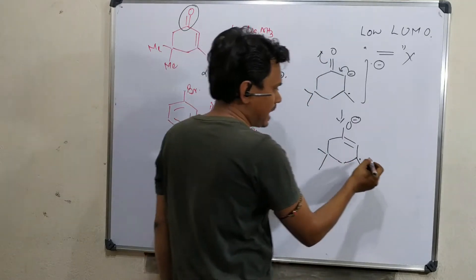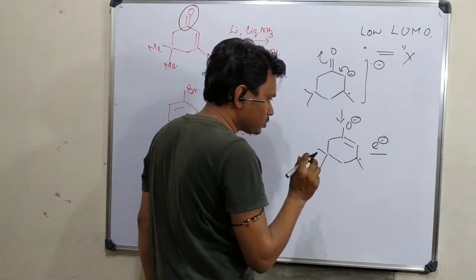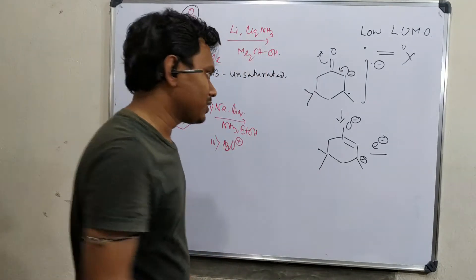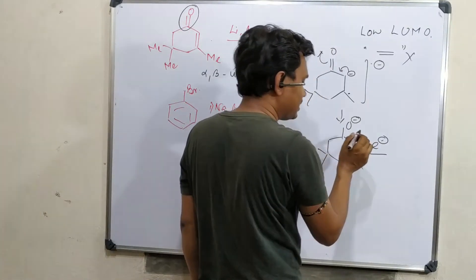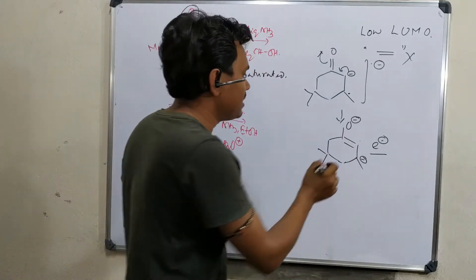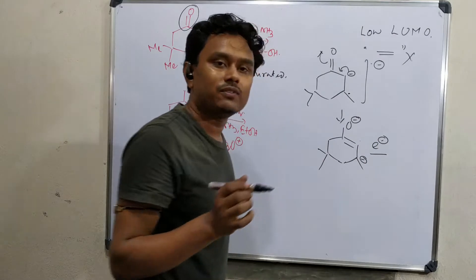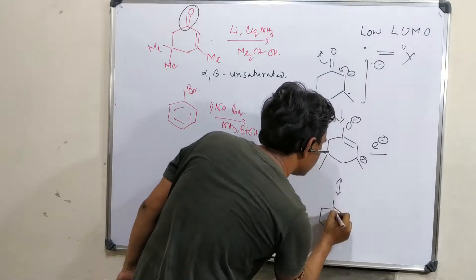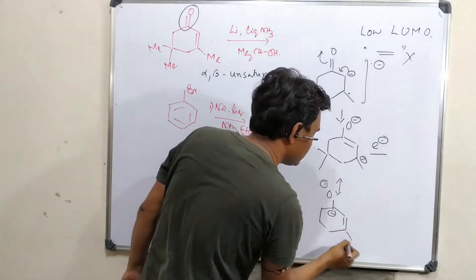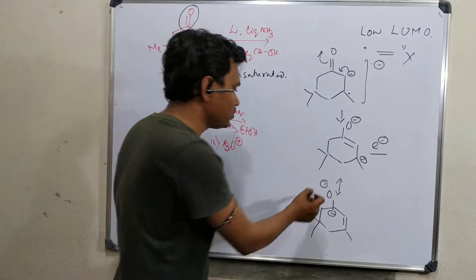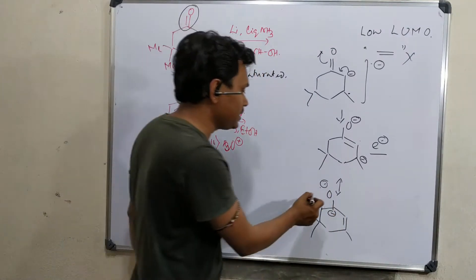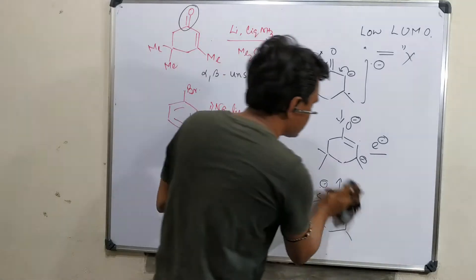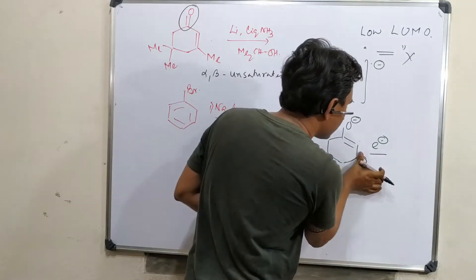Now you might think the negative charge could be conjugated and come here, but it will not be stable because adjacent atoms having negative charge — with resonance the O minus minus double bond form — would be extremely unstable because two negative charges on adjacent atoms would have severe repulsion. So the negative charge will be stable at that carbon position. Consequently, this will be protonated at that position and reduction happens here.